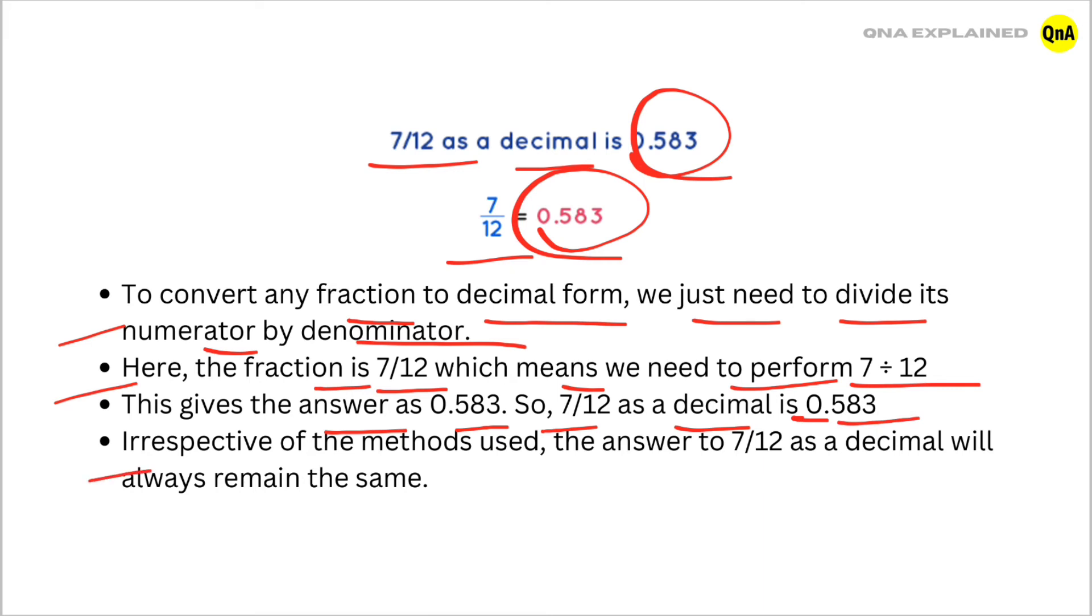Irrespective of the methods used, the answer to 7 upon 12 as a decimal will always remain the same.